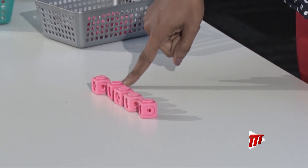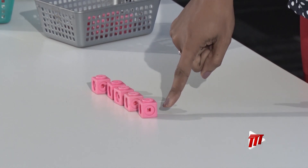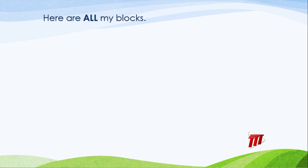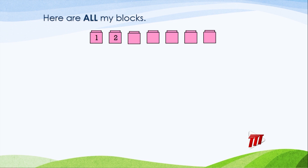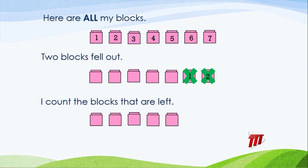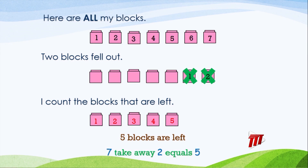Let's count: one, two, three, four, five. Seven take away two equals five. Now let's look at our screen. Here are all my blocks — one, two, three, four, five, six, seven. Two blocks fell out — one, two. I count the blocks that are left: one, two, three, four, five. Five blocks are left. Seven take away two equals five.